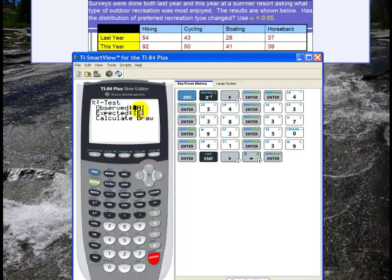So the observed is A. That's the matrix where I just stored all my data. So that's fine. The expected is B. If I want my expected counts later on I can open up B and take a look at it. And I hit calculate.